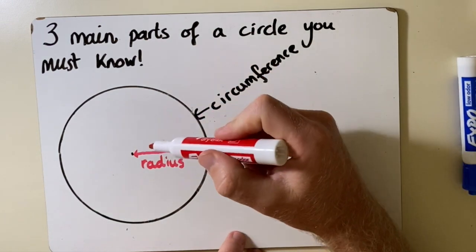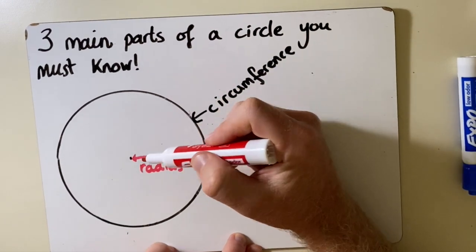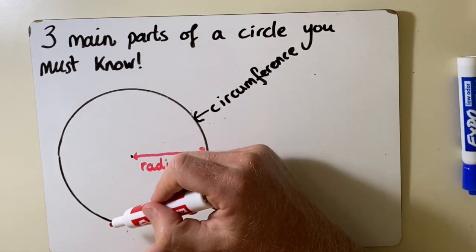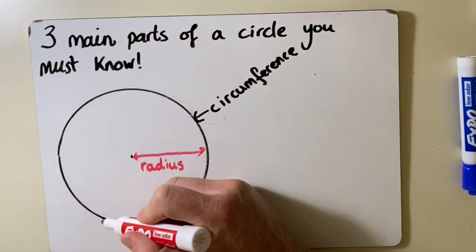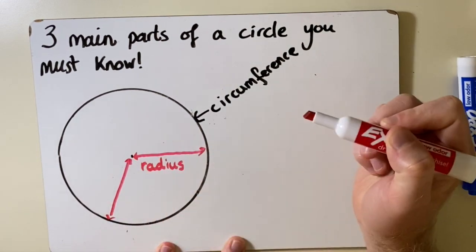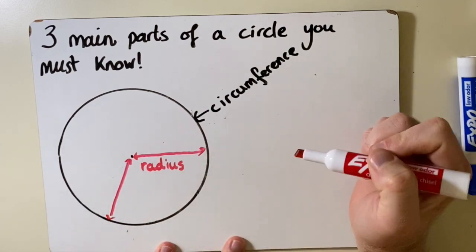Now one thing to know here is that the radius can be taken from any part of the circle as long as it goes into the center. So I could measure the radius from this edge of the circle all the way up until the center point and that would also be the radius.